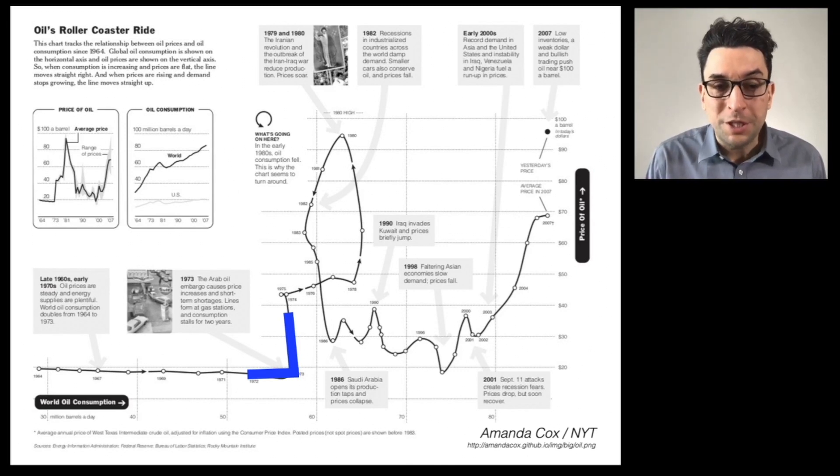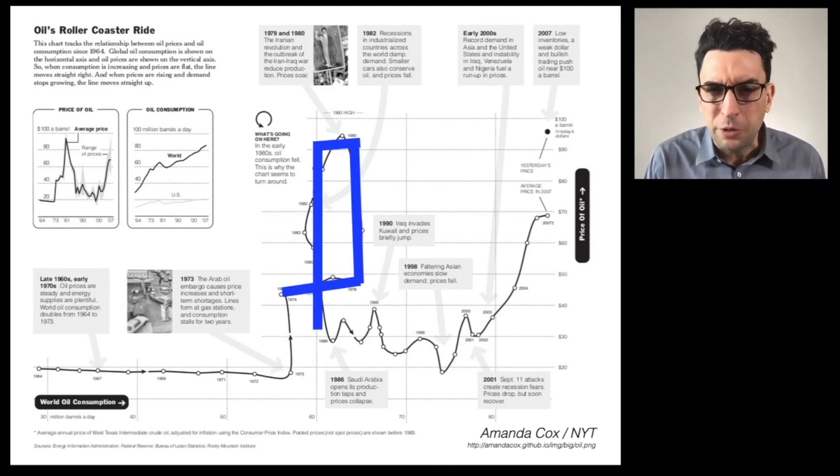But the visualization can do some really funny stuff. There's that loop up there. Take a moment to think what that means. What does it mean when there's a little rollercoaster loop in a connected scatterplot like this? This took me a while to figure out. I had to play with some of these to work it out in my own brain, but it's a time-delayed correlation.